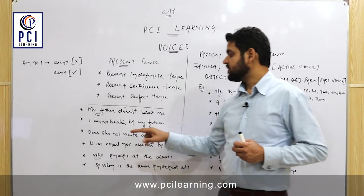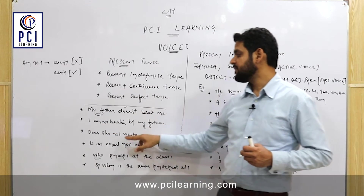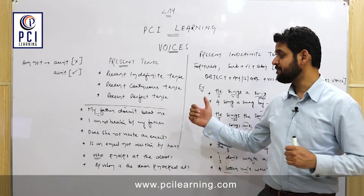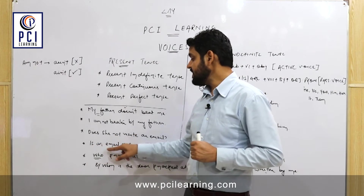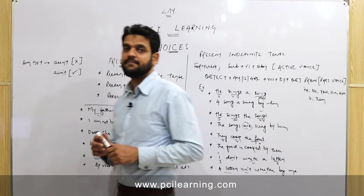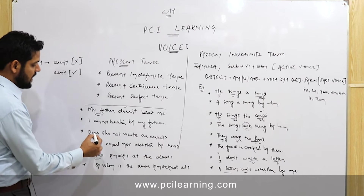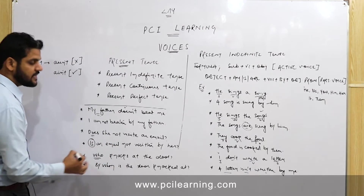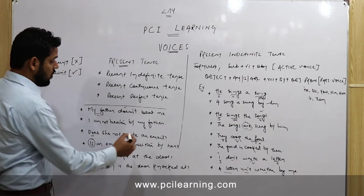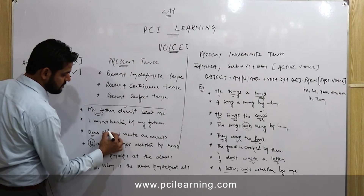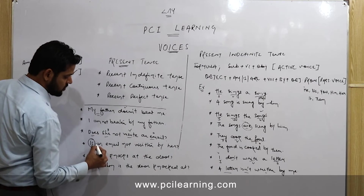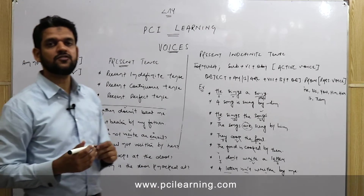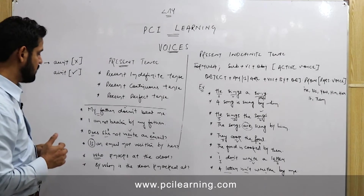Now an interrogative negative example: 'Does she not write an email?' The passive voice is: 'Is an email not written by her?' The helping verb 'does' is replaced by 'is', which comes first because it is the helping verb. The object 'an email' becomes the subject and 'she' changes to 'her'.